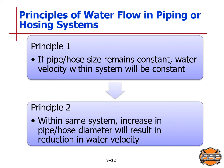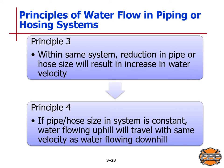Principles of water flow in piping or hose systems: Principle 1 — if pipe or hose size remains constant, water velocity will be constant. Principle 2 — an increase in diameter results in a reduction in velocity. Principle 3 — a reduction in pipe or hose size results in an increase in velocity. Principle 4 — if size remains constant, water flowing uphill will travel at the same velocity as water flowing downhill.